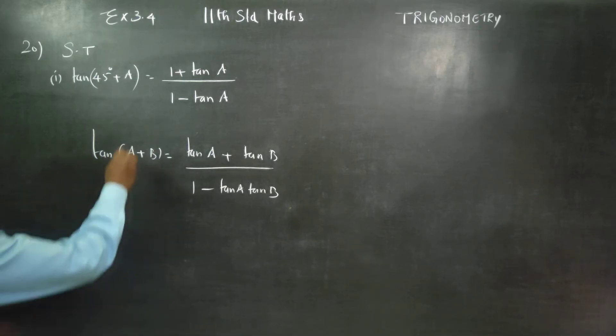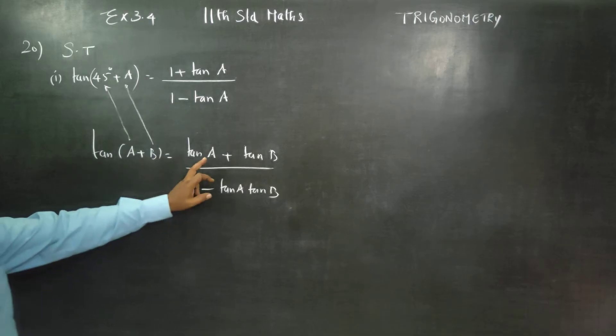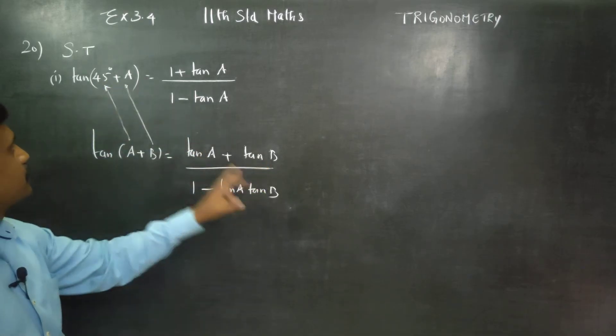Now, A is equal to 45 degree, B is equal to A. Just interchange: A is equal to 45 degree, B is equal to A.